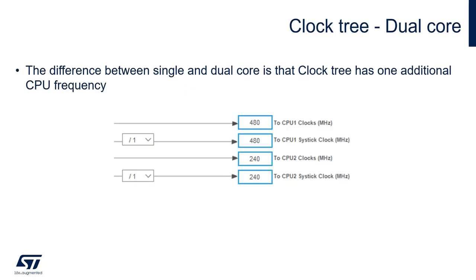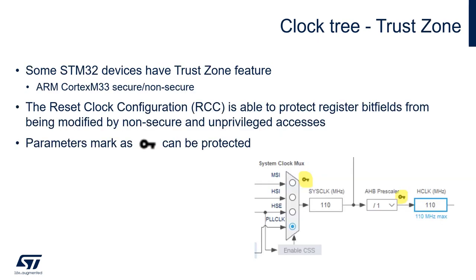Some devices have a dual core. The difference between single and dual core is that the clock tree has one additional CPU frequency. As you can see in the picture, there is a frequency for CPU1 and CPU2. Additionally, some STM32 devices have a TrustZone feature. This is based on the Cortex-M33. The RCC is able to protect register bitfields from being modified by non-secure and unprivileged accesses. As you can see in the picture, there is a key mark — parameters marked with a key can be protected.